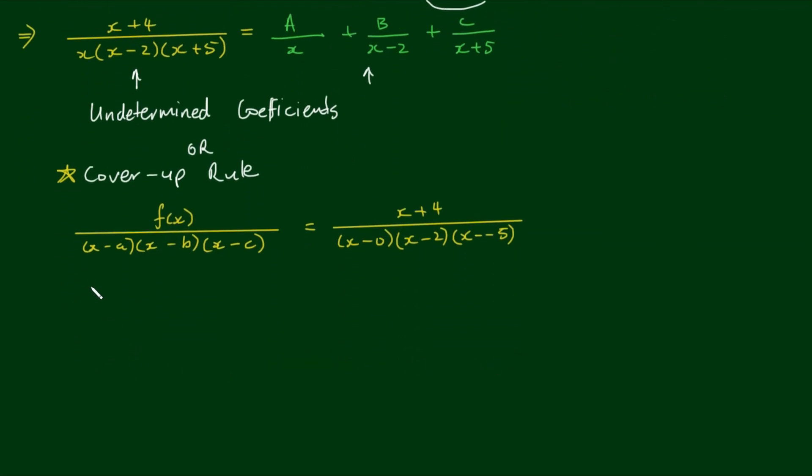The formula for the cover-up rule is the constant A is given by f of the number a divided by a minus b times a minus c. You cover up the factor x minus a, get the number a which is 0, and plug it into f of x, so 0 plus 4. Then put 0 into x for the remaining two factors: 0 minus 2 times 0 minus negative 5. This gives us 4 divided by negative 2 times positive 5, which equals negative two-fifths.